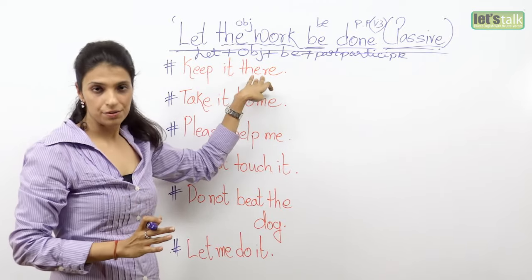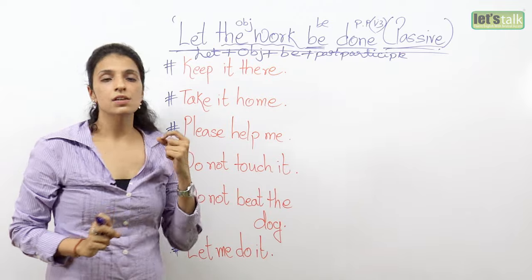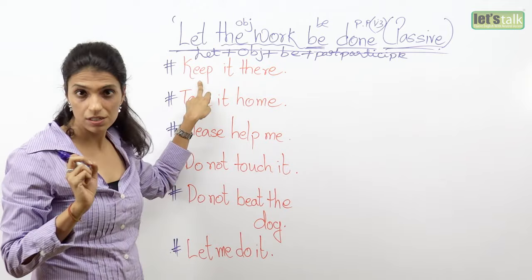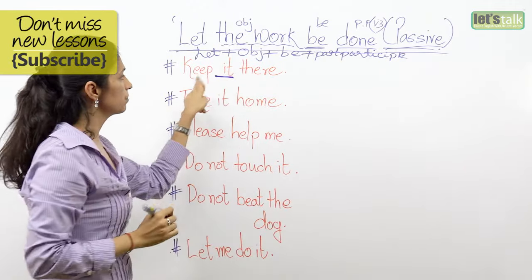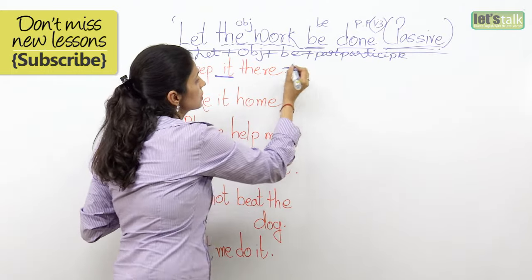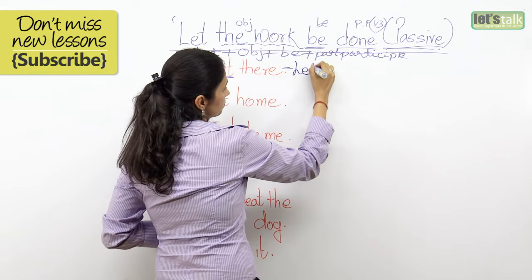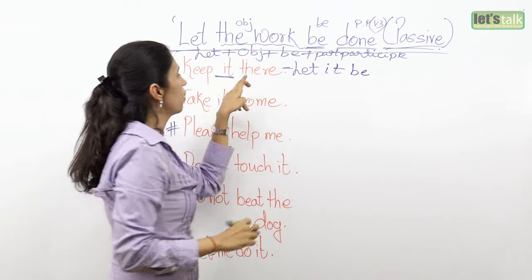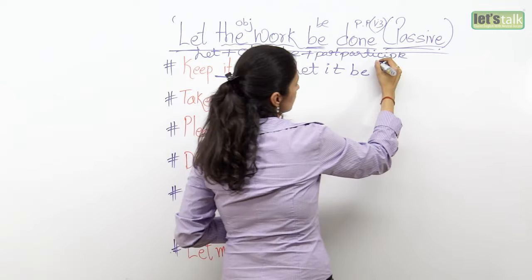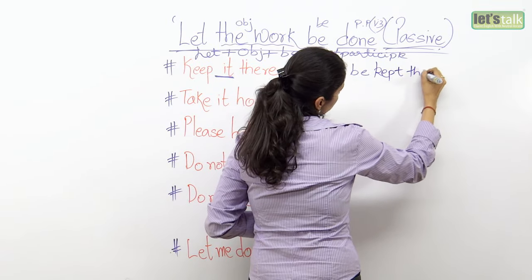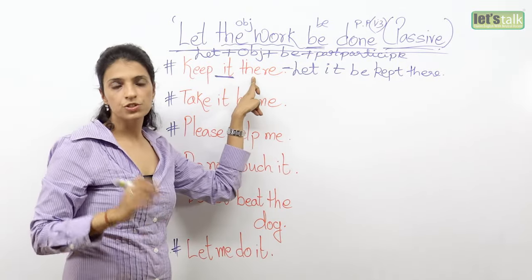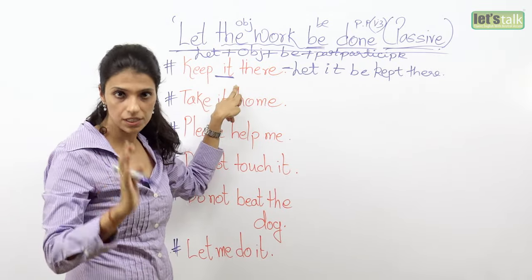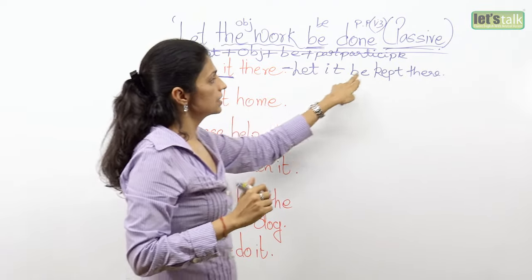Now in the first sentence, if I tell you 'Keep it there' — look for the object in the sentence. An object is a thing on which the action is done. If you ask the question 'what?' you will get the object. 'Keep it there' — so all I'm going to do is convert it into a passive voice. You have 'let,' the object 'it,' then 'be,' and the past participle of 'keep' is 'kept.' Don't assume 'there' to be the object just because it is at the end of the sentence. Ask 'keep what?' — the answer is 'keep it.' So: 'Let it be kept there.'